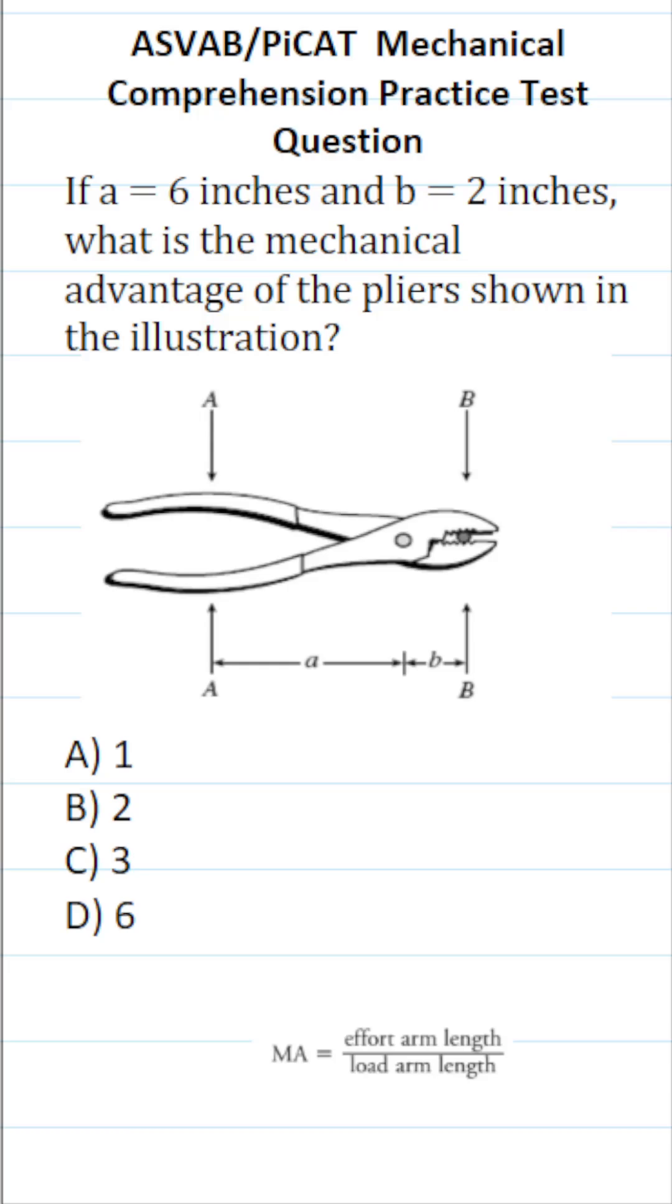This mechanical comprehension practice test question for the ASVAB and PICAT says, if A equals 6 inches and B equals 2 inches, what is the mechanical advantage of the pliers shown in the illustration?